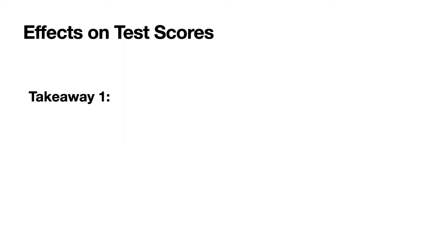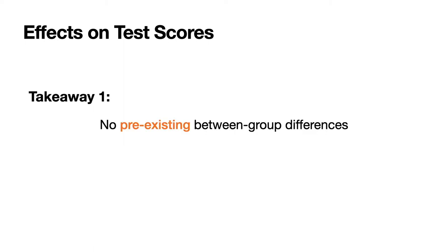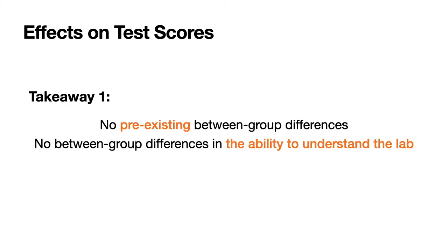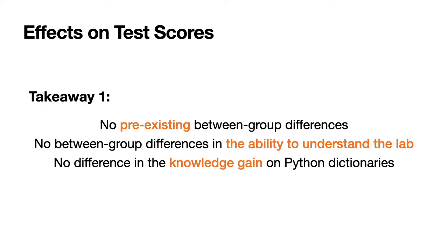Which leads us to our first takeaway: we observed no pre-existing differences between the groups using PBS and PBNO. PBS caused no difference in their ability to understand the lab, and PBS caused no difference in their knowledge gained on Python dictionaries.